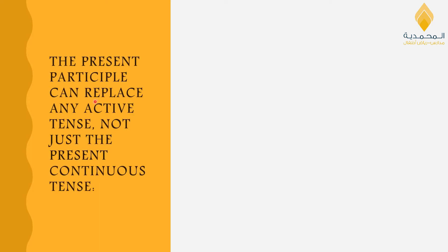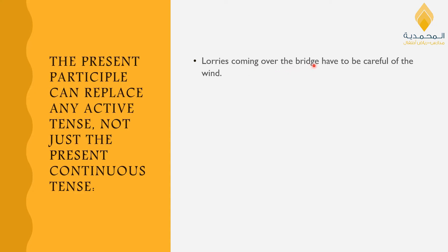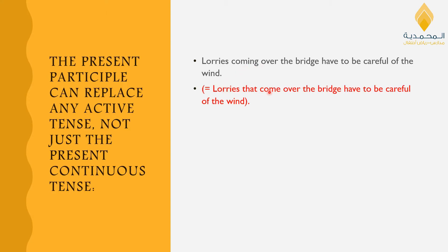The present participle can replace any active tense, not just the present continuous. Let's look at another example: 'Lorries coming over the bridge have to be careful of the wind.' The present participle here is 'coming.' The relative clause version is: 'Lorries that come over the bridge have to be careful of the wind.' This uses the present simple tense, and again it is active.